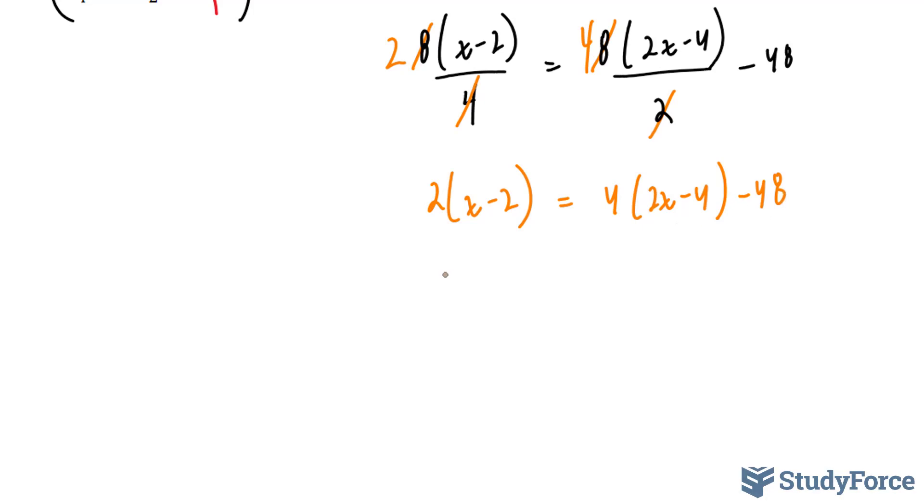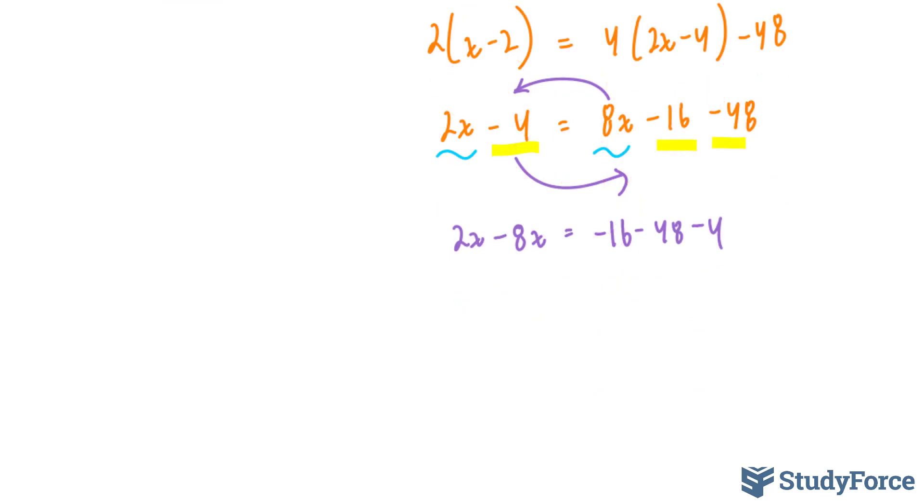Now I'm going to expand this whole thing: 2x - 4 = 8x - 16 - 48. These terms are alike. So I'm going to move this over and move this over. We end up with 2x - 8x = -16 - 48 - 4. I'm going to simplify the left side. I end up with -6x. And on the right side, everything is negative. So -16 - 48 is -64, minus 4 is -68.